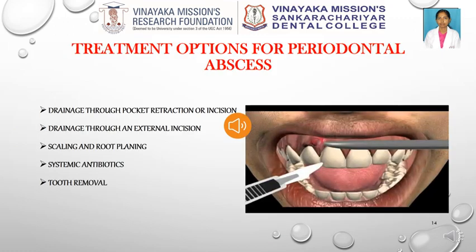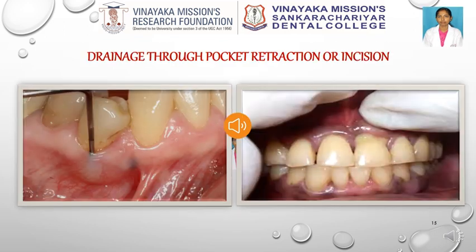The treatment options for periodontal abscess include drainage through pocket retraction or incision, drainage through an external incision, scaling and root planing, systemic antibiotics, and if the tooth is hopeless, it can be removed. After anaesthetizing the area, the pocket wall is retracted using curettes to initiate drainage through the pocket entrance. Gentle digital pressure can be used to clear the pocket.